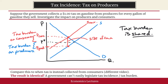How does this compare to when taxes are instead collected from consumers? Something I look at in a different video. The result is identical — the tax burden is shared in the same amounts by producers and consumers. It doesn't matter if a government comes along and decides to collect taxes from consumers or collect taxes from producers; the tax burden is shared. A government cannot easily legislate tax incidence or tax burden. And that concludes this video.